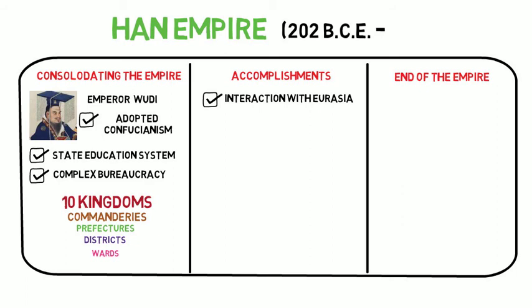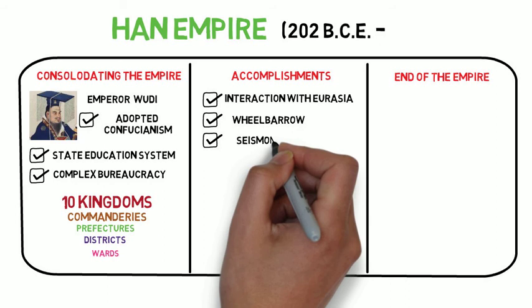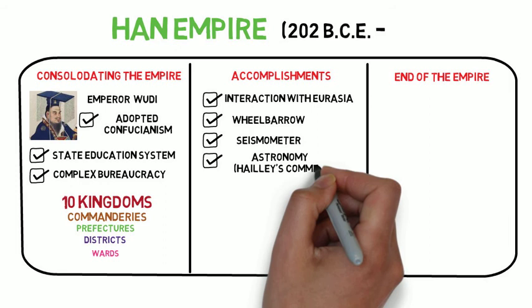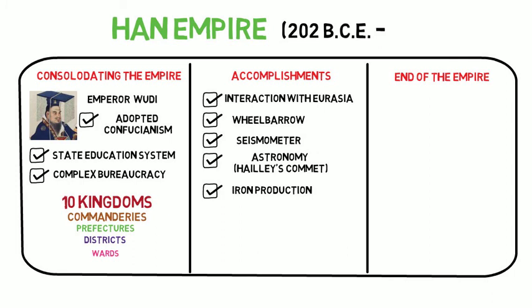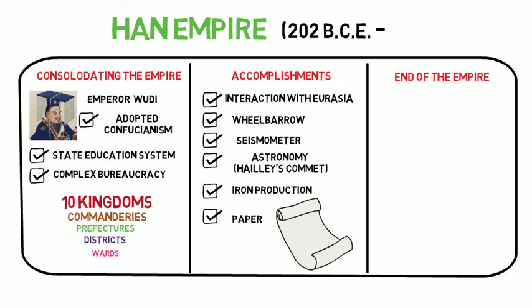An impressive list of technological achievements made during the Han Dynasty includes the development of the world's first wheelbarrow, a seismometer which measured the strength of earthquakes, Han astronomers first observed Halley's Comet, and the development of blast furnaces used for making iron. Perhaps most importantly, Han China was the first to invent and use paper. By the 3rd century the use of paper was widespread throughout China. It did not reach the Arab world until the 7th century and did not reach Europe until the 12th century.